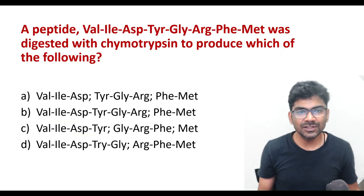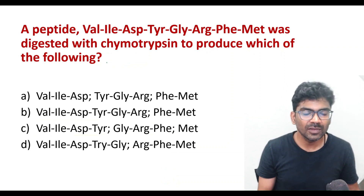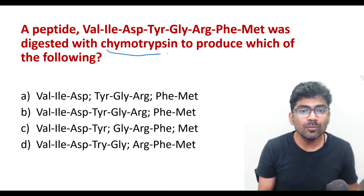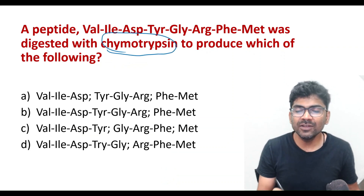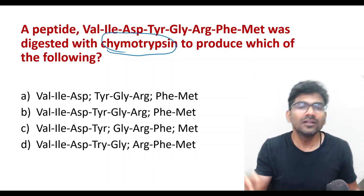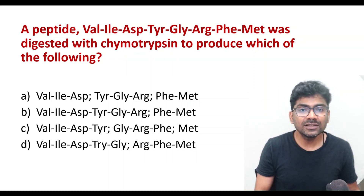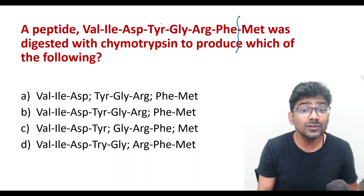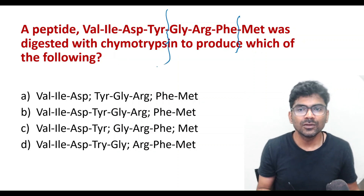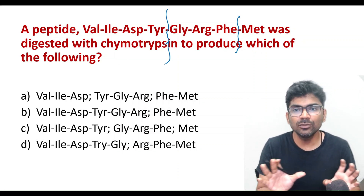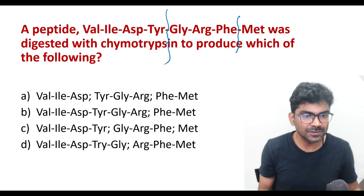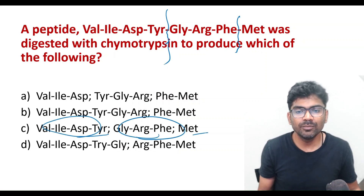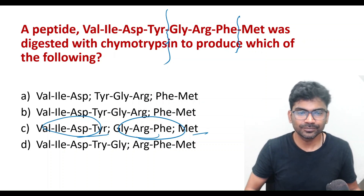What about the second question? This is about chymotrypsin. Chymotrypsin will cleave after phenylalanine and tyrosine. Look at the sequence — there is one phenylalanine here and one tyrosine here. So it will cleave into three fragments: this one, this one, and methionine will be separate.